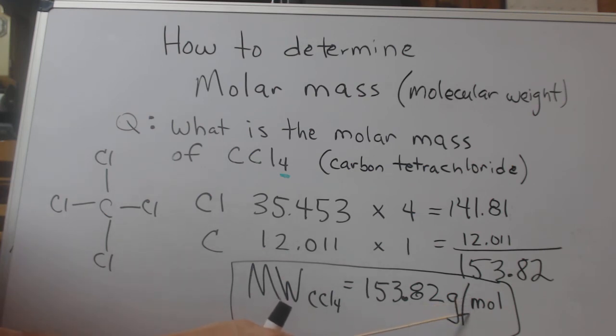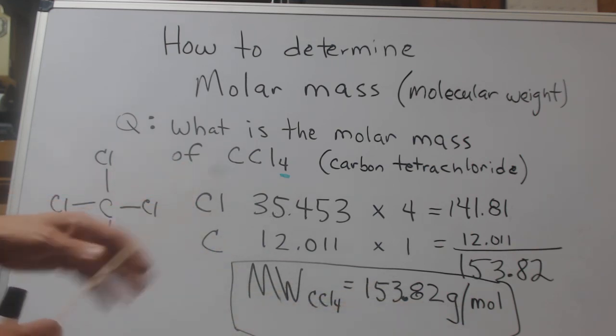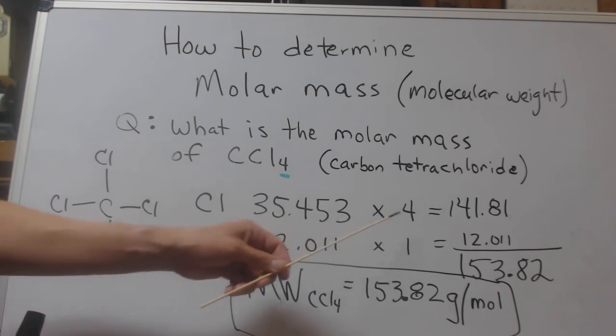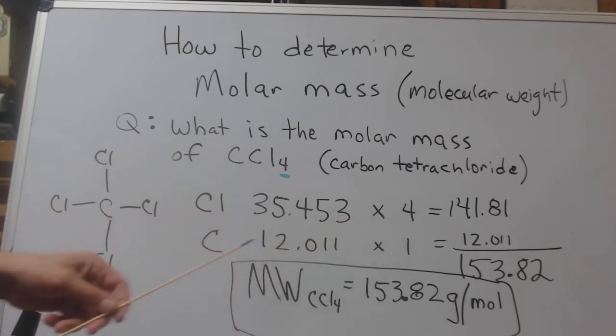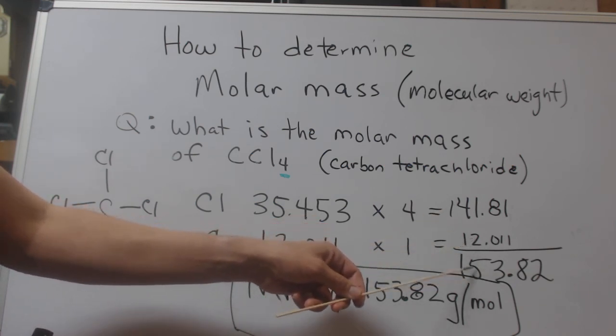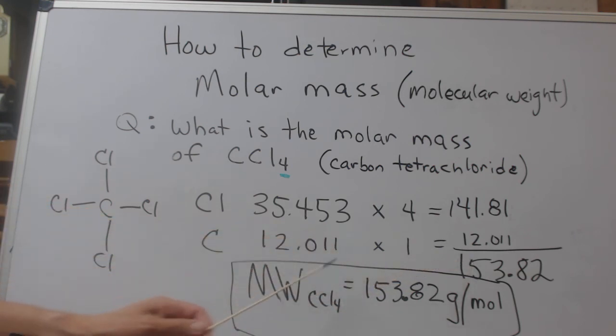There's an understood one here. We just don't write it. So this is the answer here. Let's backtrack. Carbon tetrachloride: one carbon, four chlorines. Here's chlorine, the atomic mass. There's four. And there's carbon. We get the corresponding masses, we add them up, and that is our molecular weight or molar mass of carbon tetrachloride.